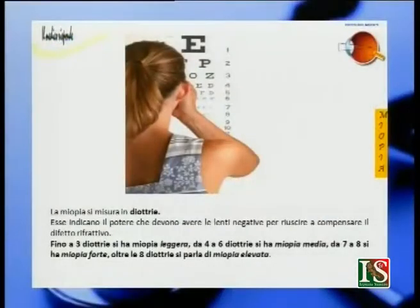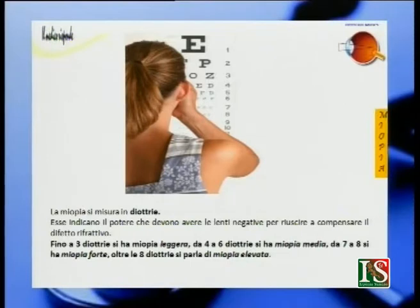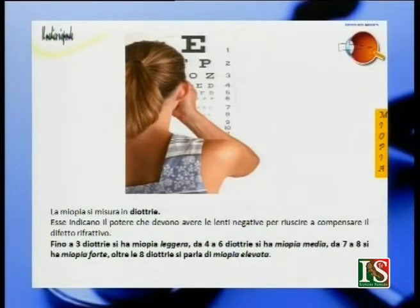Come si misura la miopia? La miopia si misura in diottrie. Esse indicano il potere che devono avere le lenti negative per riuscire a compensare il difetto rifrattivo. Fino a 3 diottrie si parla di miopia leggera, da 4 a 6 di miopia media, da 7 a 8 di miopia forte, e oltre le 8 diottrie di miopia elevata.